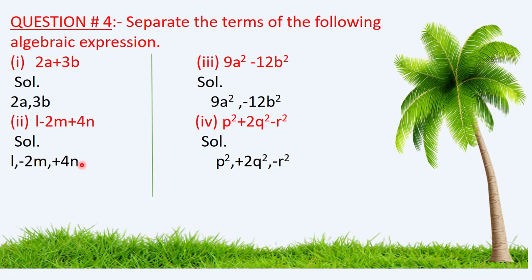Question Number 4: separate the terms of the following algebraic expressions. In the first part, the expression is 2a + 3b. Just as a comma in English is used to separate items in a list, here we will use a comma to separate the terms of the expression. We separate the terms of 2a + 3b by inserting a comma between them.